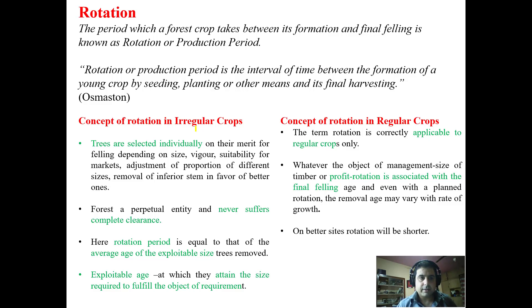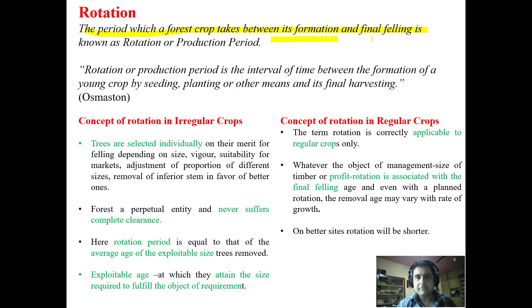Welcome back. Now we will try to understand about rotation of forests. Rotation can be defined as the period which a forest crop takes between its formation and final felling. A crop may be raised through planting or artificial means in case of even-aged stands, and in case of uneven-aged stands we rely on natural regeneration. The period between formation and final harvest is known as rotation.